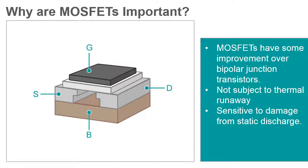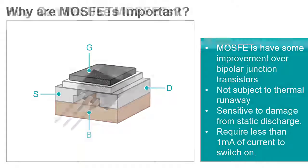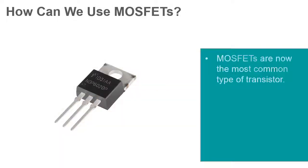Another advantage of the MOSFET transistor over a regular transistor is that the MOSFET requires less than 1 milliamp of current to turn on, yet is able to deliver a much higher current to a load of 10 to 50 amps or more. The MOSFET is now the most common type of transistor in both digital and analog circuits.